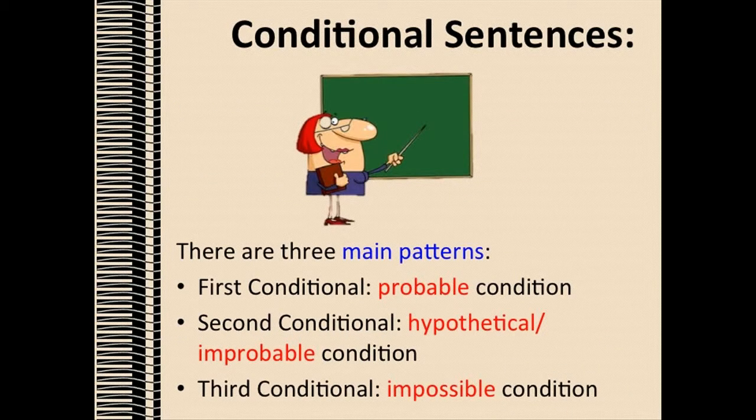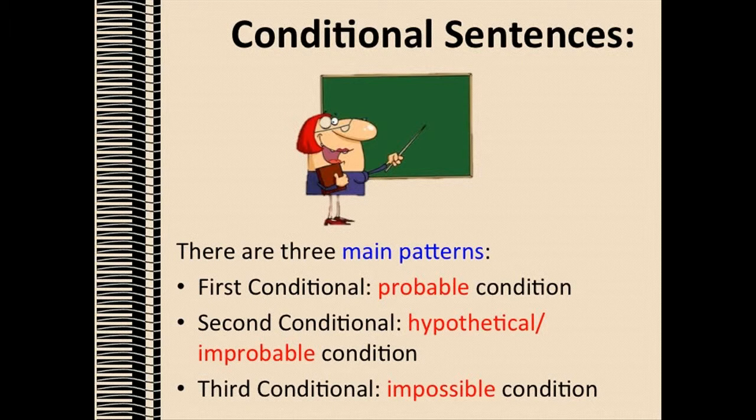Conditional sentences. First of all, there are three types of conditional sentences with three different main patterns. The first conditional expresses a probable condition. The second conditional expresses a hypothetical or improbable condition. And finally, the third conditional expresses an impossible condition.